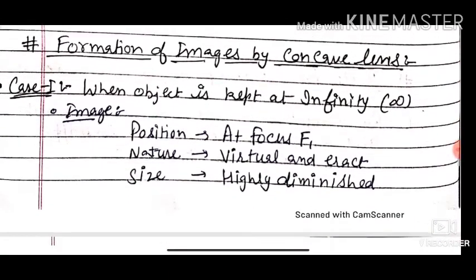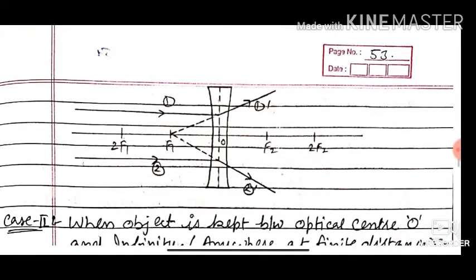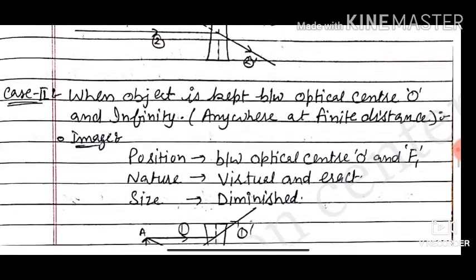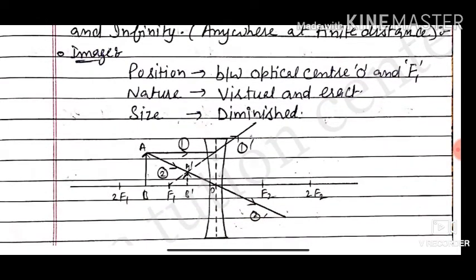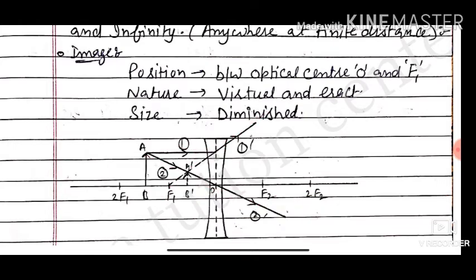Formation of images by concave lens: Case 1 — when the object is at infinity, the image is virtual, erect, and highly diminished to point size at F1, as the parallel beam appears to meet at focus. Case 2 — when the object is anywhere between optical center and infinity (at any finite distance), the image is formed between F1 and the optical center, virtual, erect, and diminished.